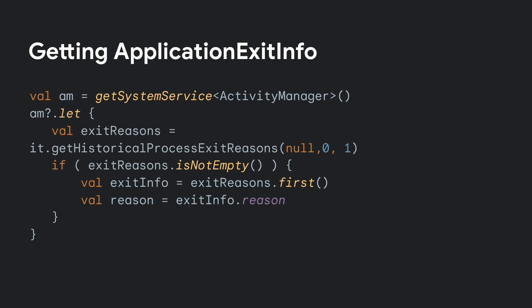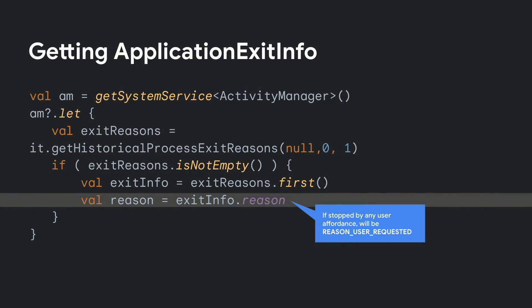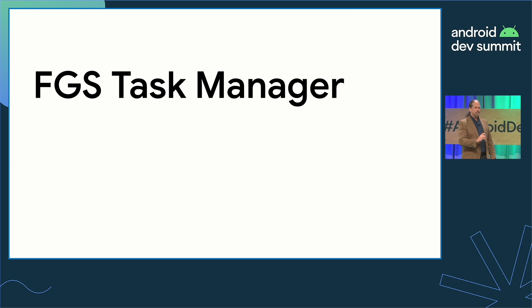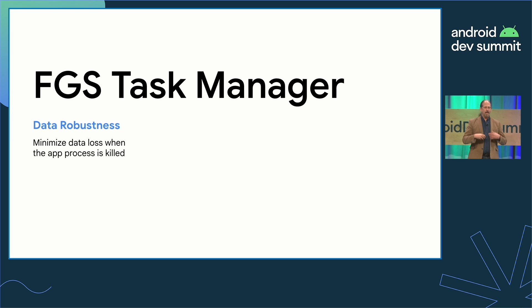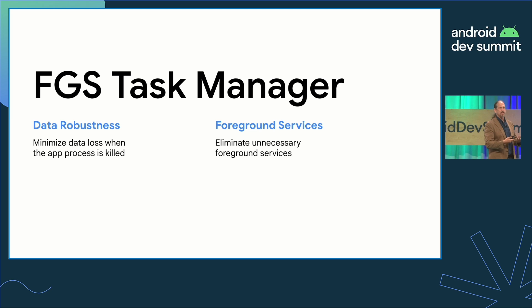When your app is stopped in the FGS task manager, you won't get any callbacks from the system. But you can check what happens the next time your app starts using the application exit info API — this will tell you if the user stopped your app and lets you check for crashes, ANRs, unhandled exceptions, and low memory. Two takeaways: first, make sure your app can handle being stopped at any state, minimizing data loss. Second, this is a good time to analyze whether you really need to rely on foreground services, because foreground services reduce the flexibility for Android to schedule things, and using jobs is better for system health.